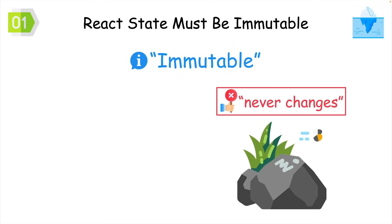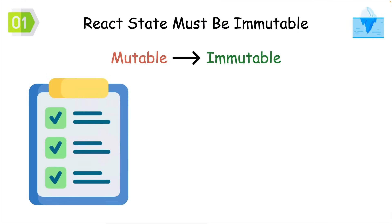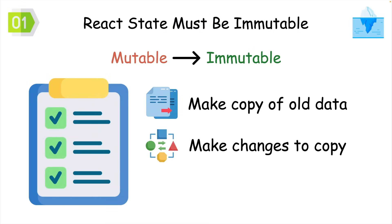If state is immutable, it doesn't mean it never changes. But you avoid mutations by replacing old data with new data that includes the changes you want it to have. To do that, you have to follow the basic steps of make a copy of the old data, make the changes you want, and replace the original with the copy.